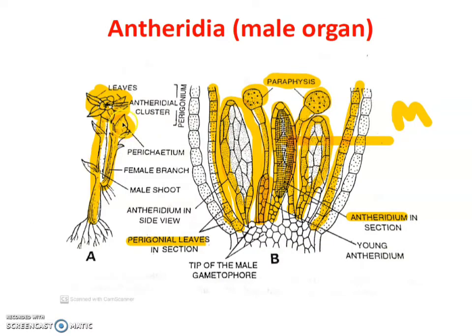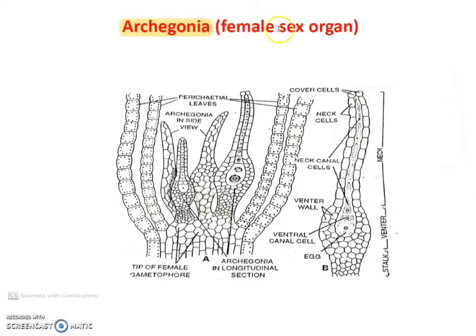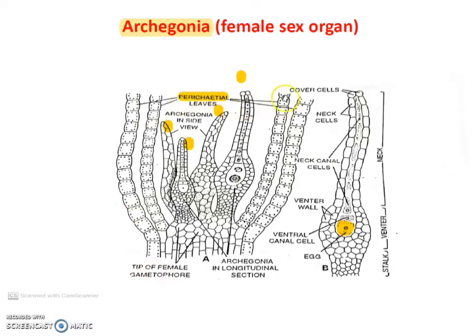The female sex organs are called as archegonium — single is archegonium and plural is archegonia. These archegonium develop egg cells. At the end of the female branch, archegonium develops. There are two main parts: archegonium and parietal leaves. Four archegonium are present and these archegonium are surrounded by the parietal leaves.